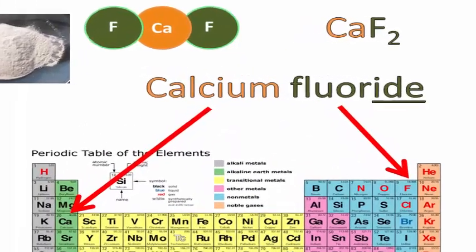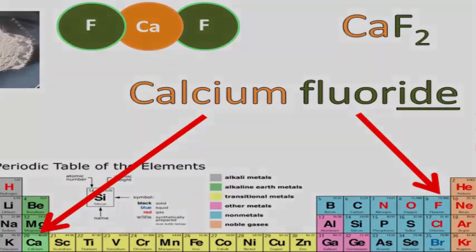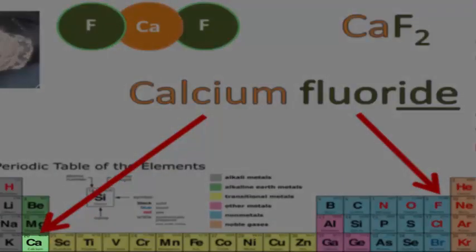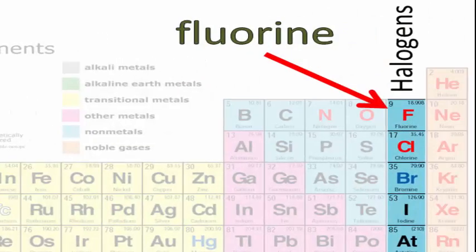Calcium fluoride. CaF2. Notice again calcium is a metal, so it's on the left. Fluorine is a halogen. It's a non-metal. The specific kind of non-metal is it's a halogen here in group 7. That's on the right.